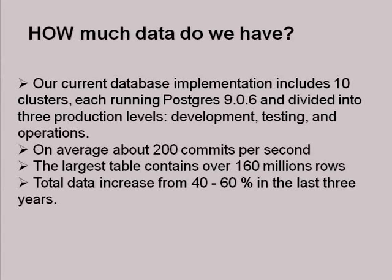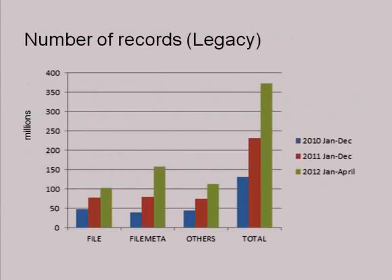Measuring database size is difficult without a standard metric, so as one indicator I want to show you: one of our biggest tables has 160 million rows and a growing rate of about 40–60% over the last three years. This is the legacy system. Growth can be hard to predict — sometimes a new provider joins and suddenly wants to reprocess 10 years of data, which can suddenly add a handful of data. We're just trying to scale our system to handle that kind of load.